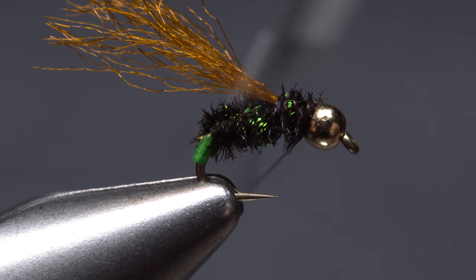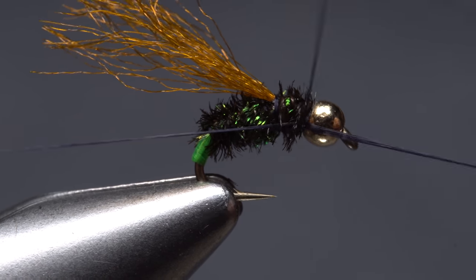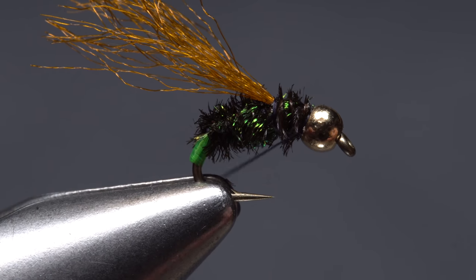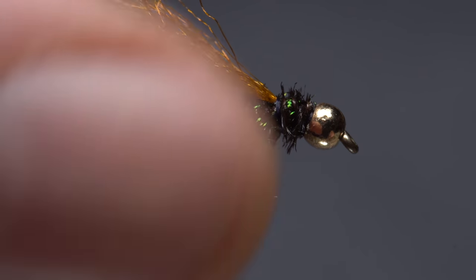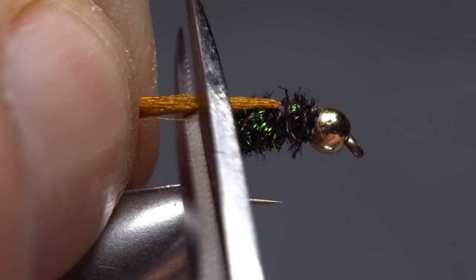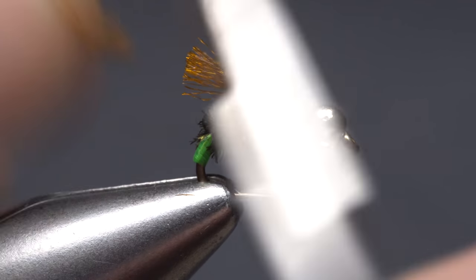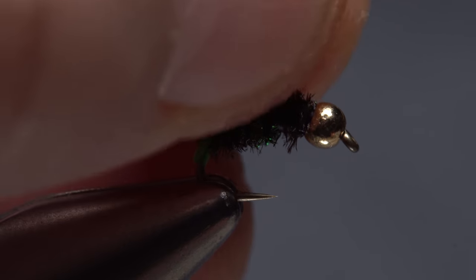Once again reach for your whip finish tool and use it to do a four or five turn whip finish. Seat the knot well and snip or cut your tying thread free. Pull the antron back and using the trailing edge of the hook as a guide snip it off square. And that's Teo's Danger Baby.